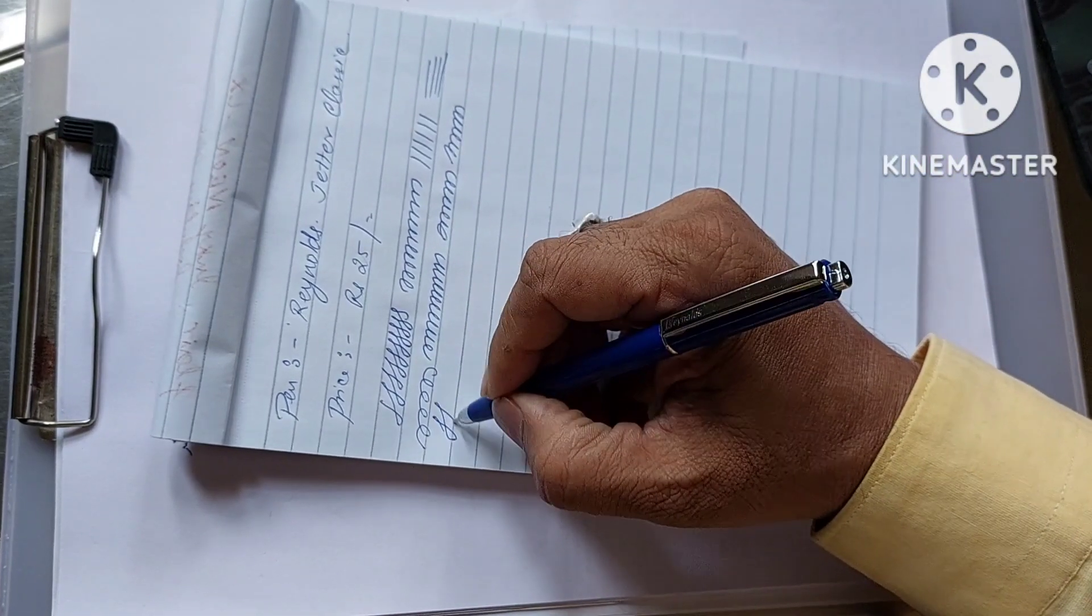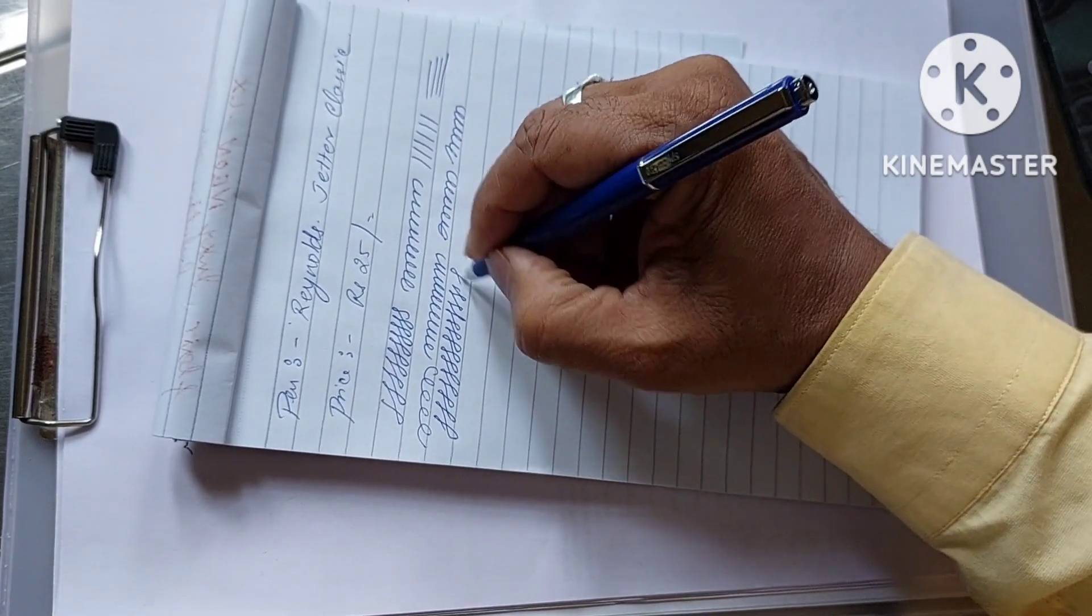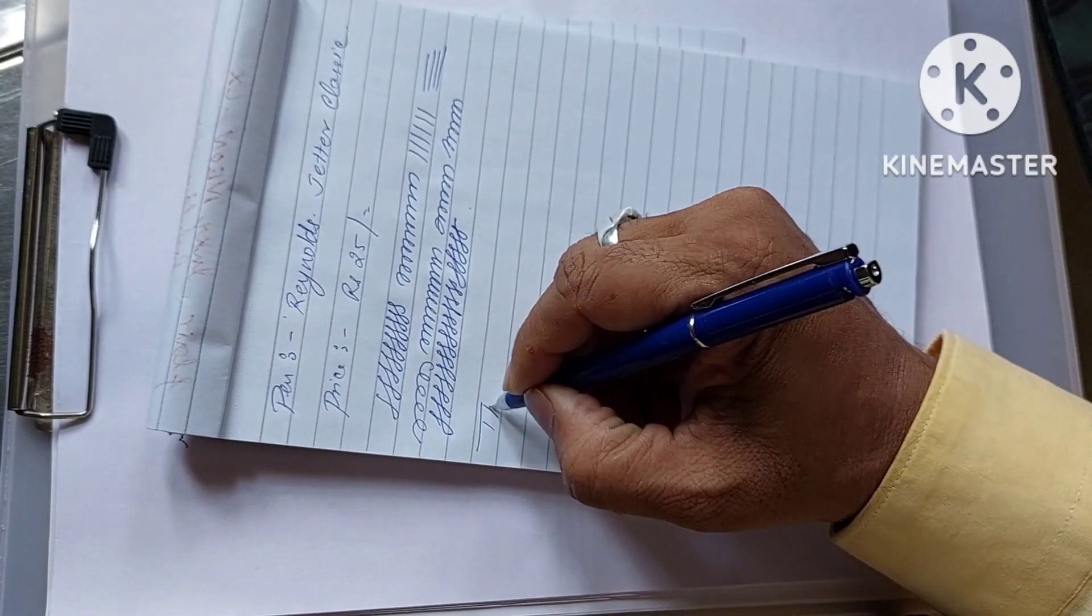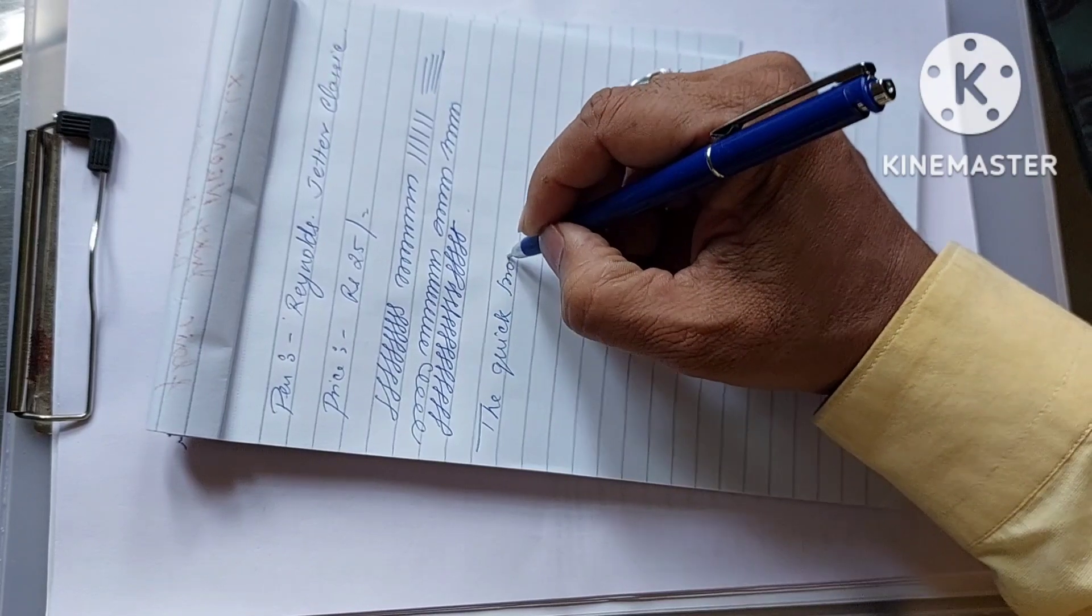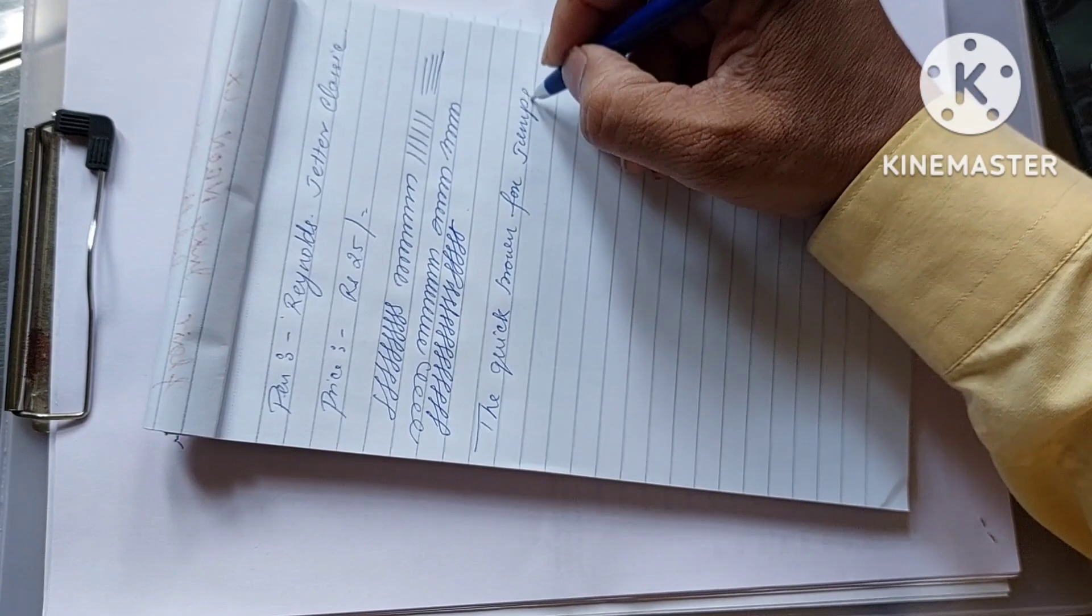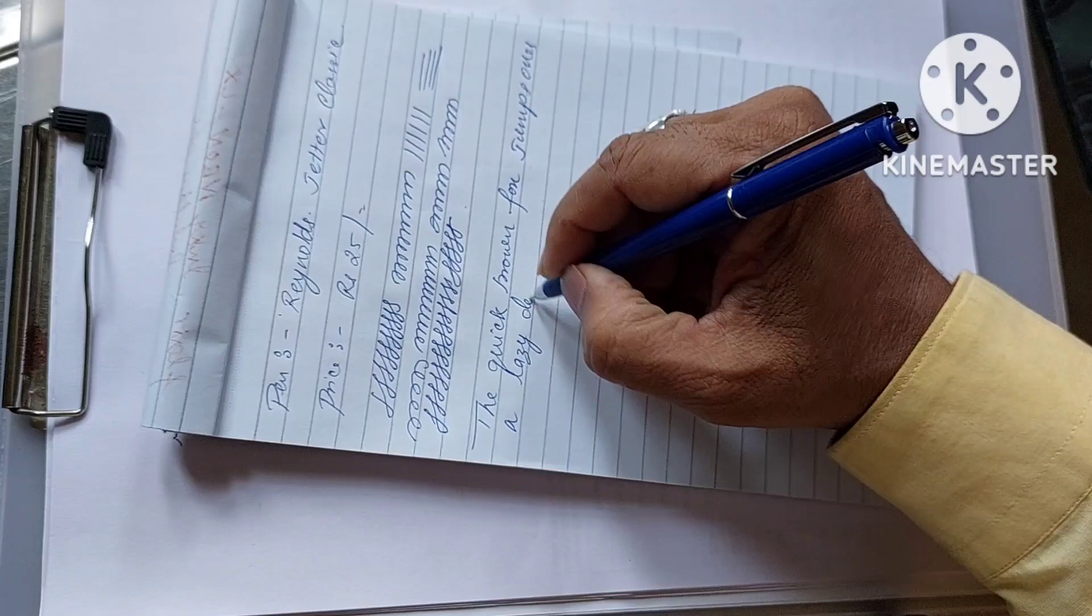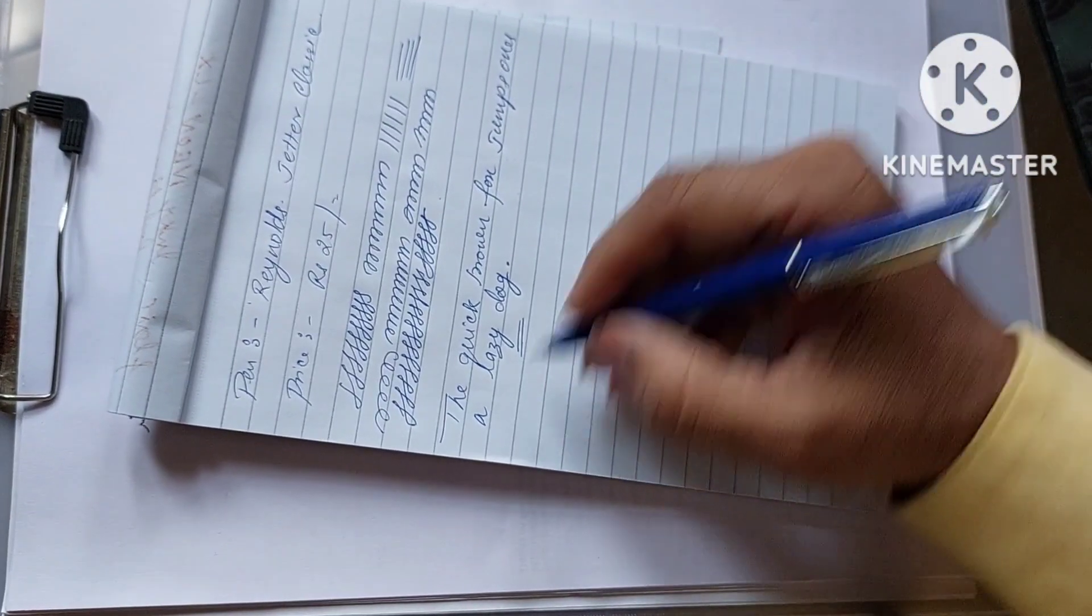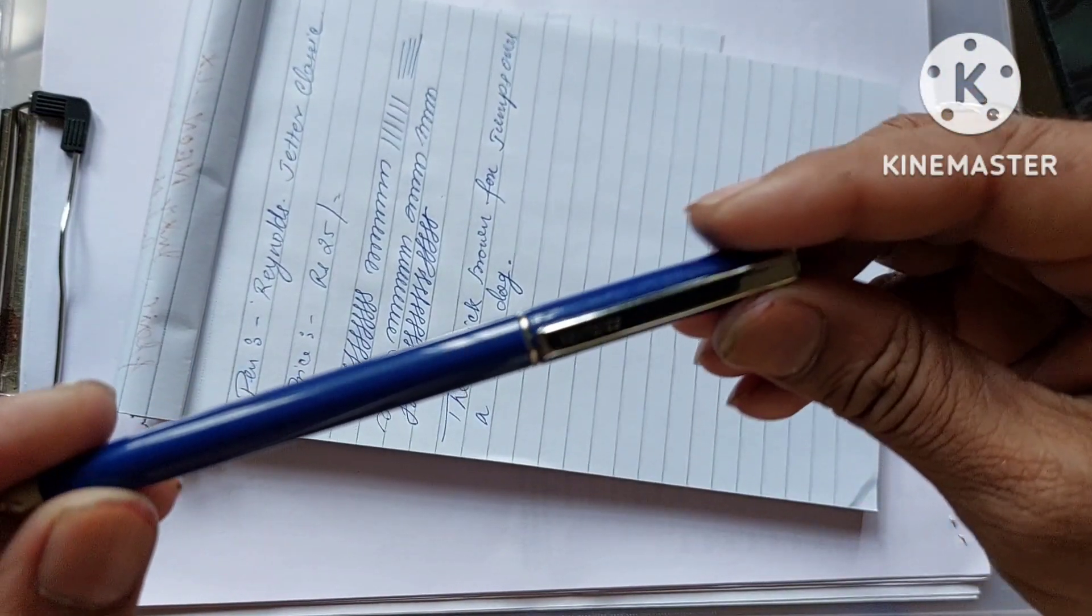Now let's have the sentence: the quick brown fox jumps over the lazy dog. Yes, really smooth writing pen. And for a price of 25 rupees this good-looking pen is available and it is really nice.